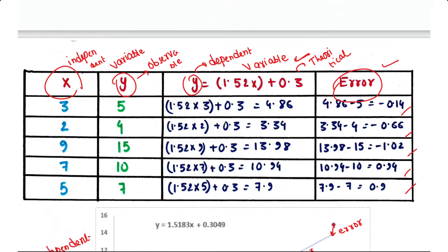When we square each of these errors and add them all up, the total should be as small as possible. That is why it is called least squares — because we don't want a vast difference between the two values. Both observable and theoretical values should be almost equal.